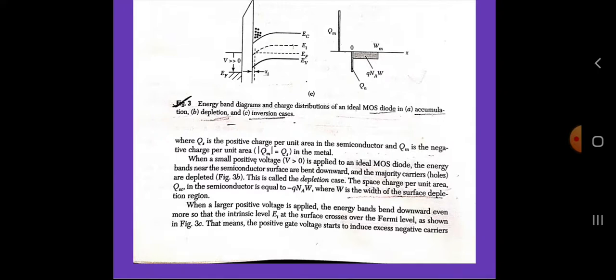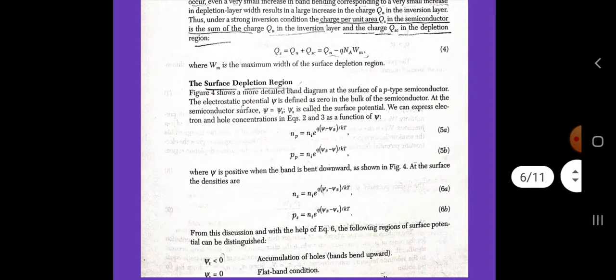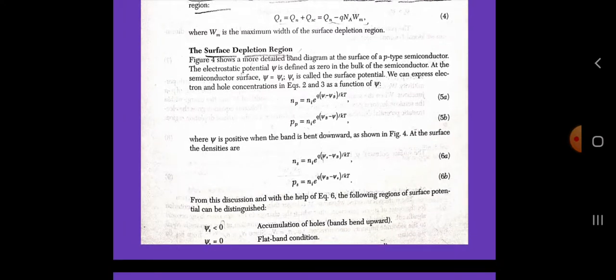The electrostatic potential psi is defined as zero in the bulk of the semiconductor. At the semiconductor surface, psi equals psi_s; psi_s is called the surface potential. We can express the electron and hole concentrations as functions of psi: np equals ni times e to the power of q(psi minus psi_B) divided by kT, and vp equals ni times e to the power of q(psi_B minus psi) divided by kT, where psi is positive when the band is bent downward. At the surface, the densities are ns equals ni times e to the power of q(psi_s minus psi_B) divided by kT, and ps equals ni times e to the power of q(psi_B minus psi_s) divided by kT.